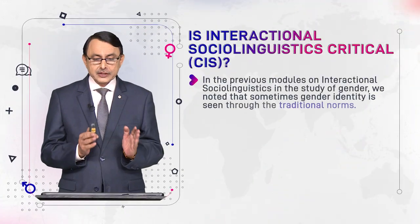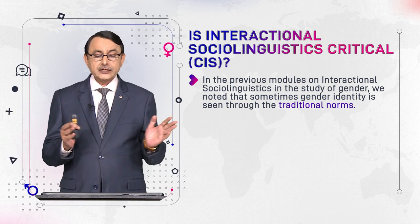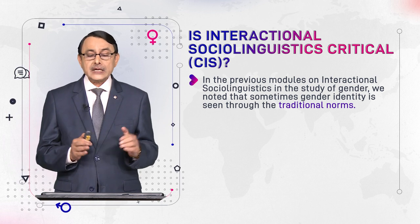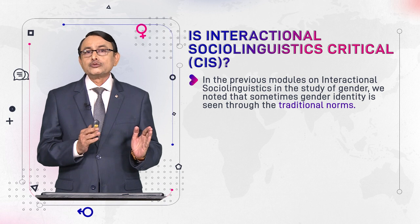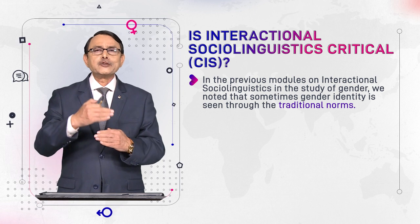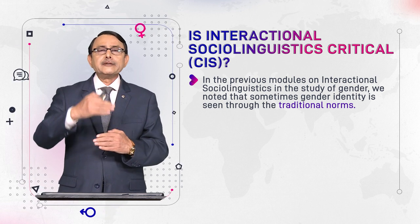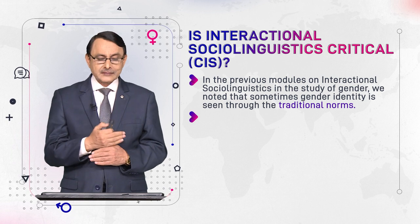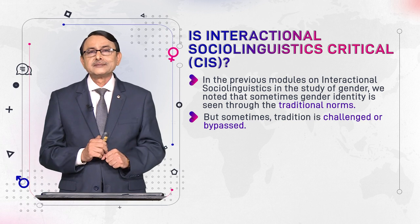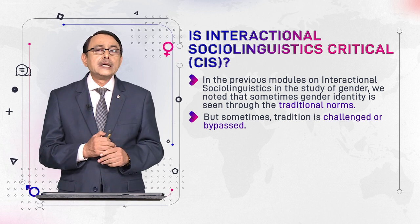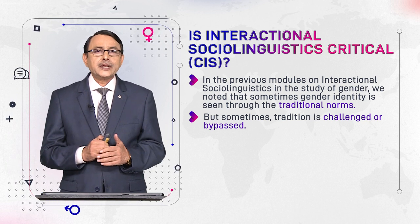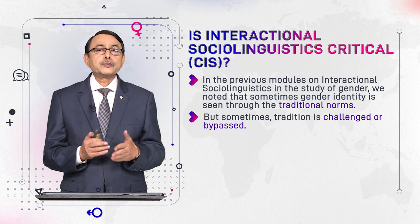In the previous modules on Interactional Sociolinguistics in the study of gender, we noted that sometimes gender identity is seen through traditional norms — that is, the relationship between micro-level interaction and macro-level gender ideology. But sometimes tradition is challenged and bypassed, as seen in the dialogue about the pink shirt discussed in the previous module.